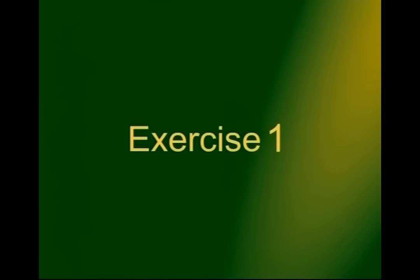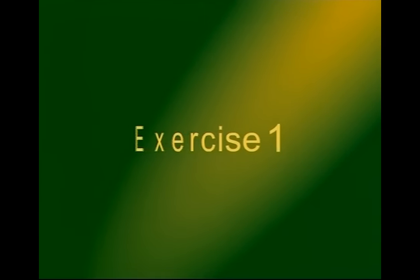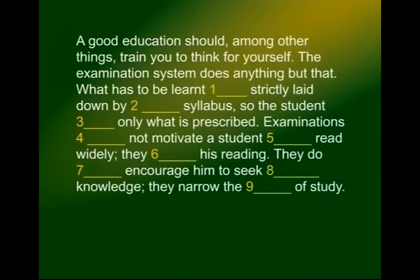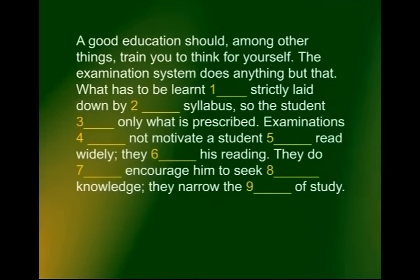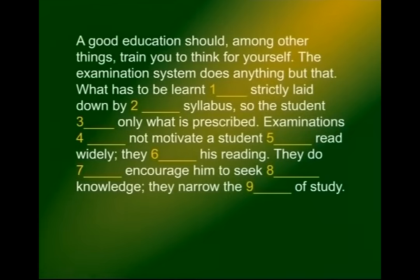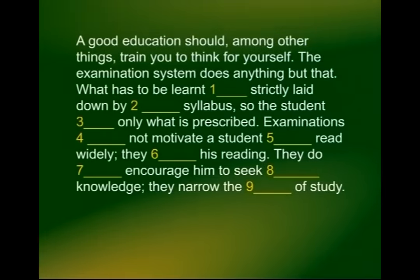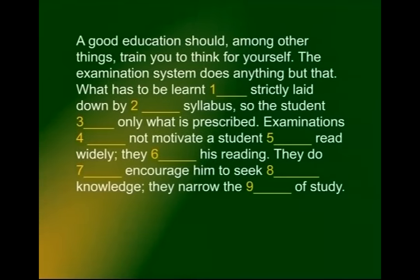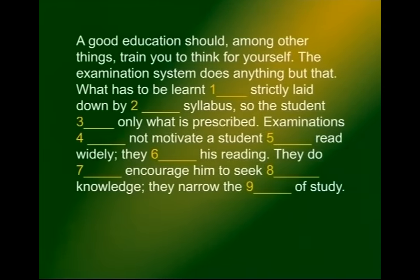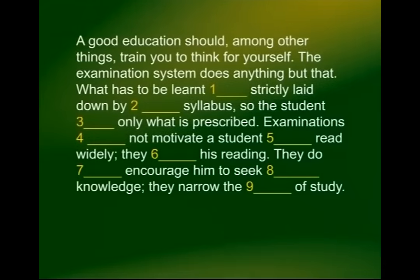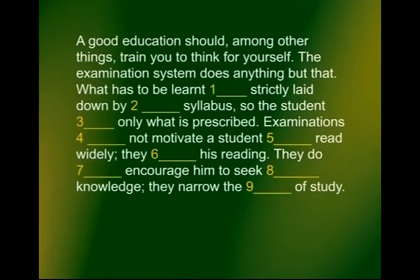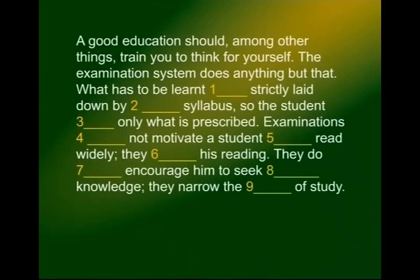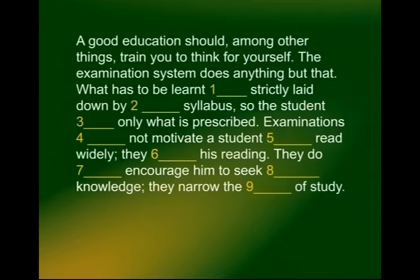Now look at exercise 1 — read it quickly. 'A good education should, among other things, train you to think for yourself. The examination system does anything but that.' Notice there are more than ten gaps. The first two sentences were without a gap. 'What has to be learnt?' — blank — 'is strictly laid down by' — blank. So the student — blank — only what is prescribed.